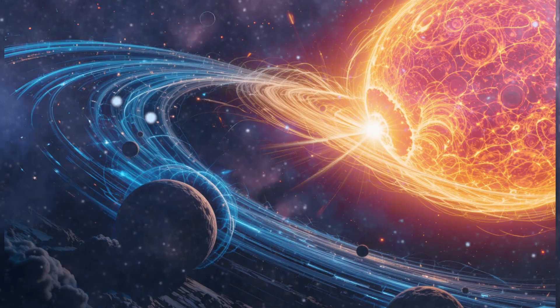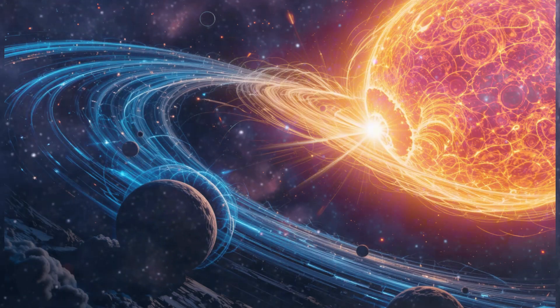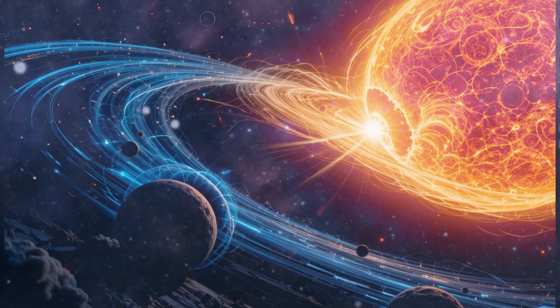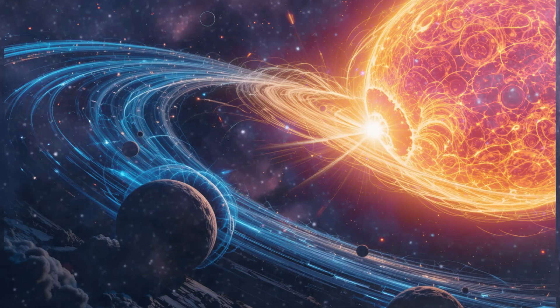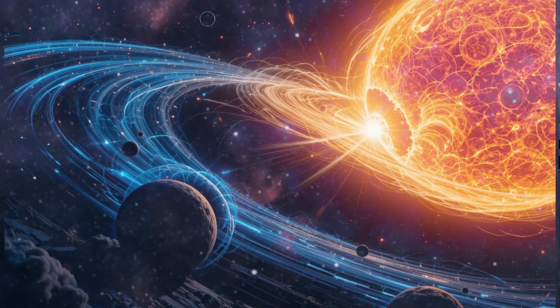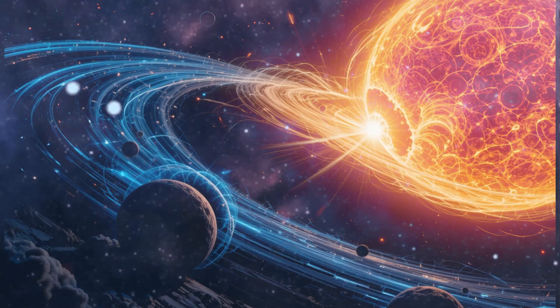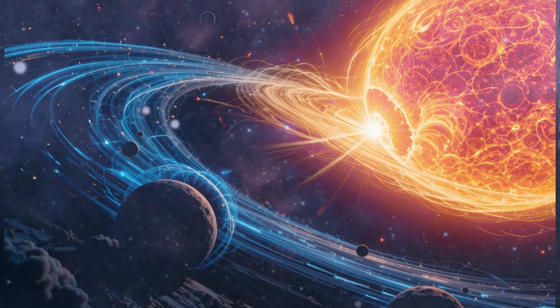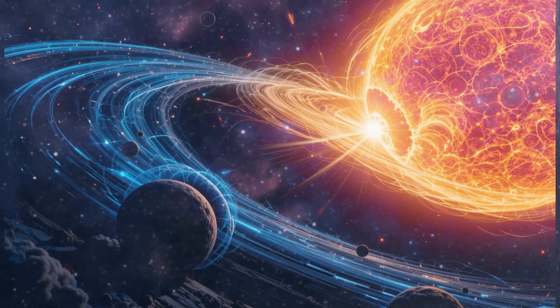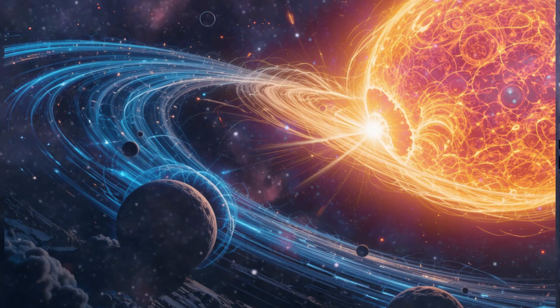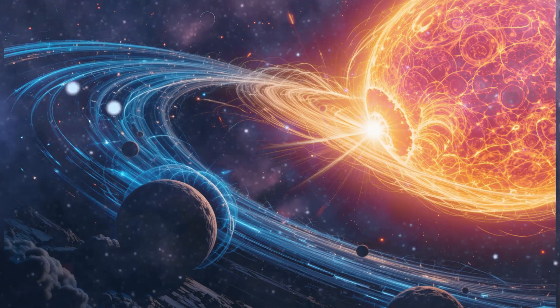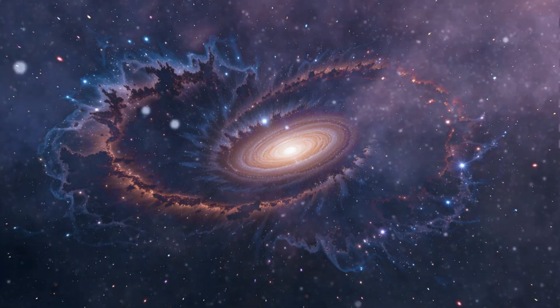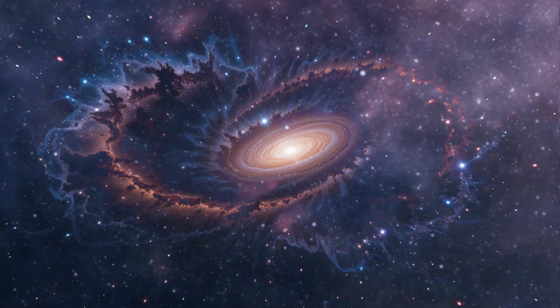Supernovae play a crucial role in the creation and distribution of elements essential for life, such as carbon, oxygen, and nitrogen. These elements are forged in the extreme conditions of a supernova explosion, where temperatures reach billions of degrees Celsius and pressures exceed those found in the cores of stars. The dispersal of these elements enriches interstellar gas clouds, providing them with the building blocks necessary for the formation of planets and, ultimately, life.